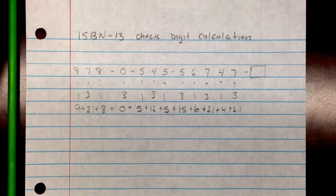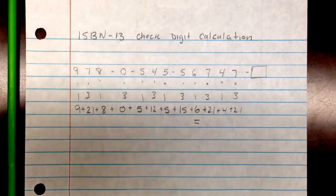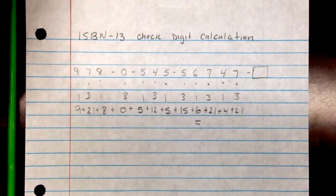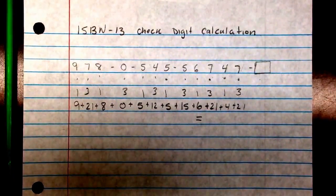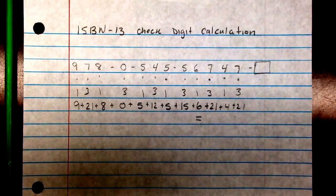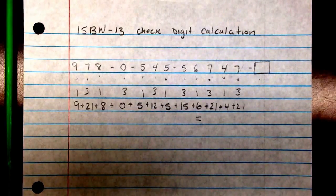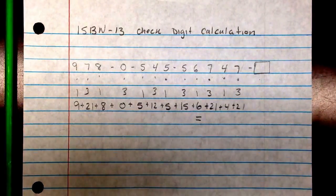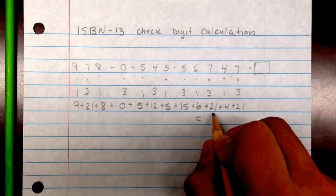From here now, go ahead and find the sum. Use your calculator to add them up and you'll get a sum for that. I'll let you pause it if you want. The sum should be 127.